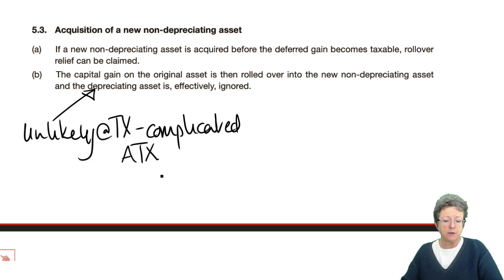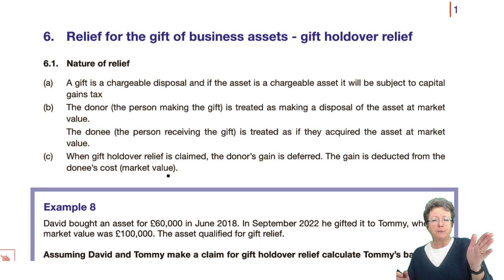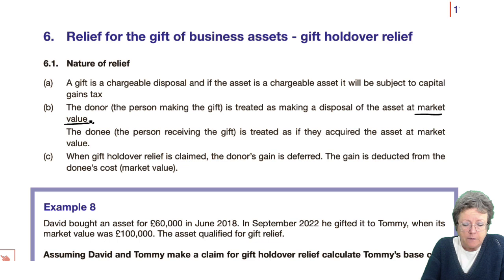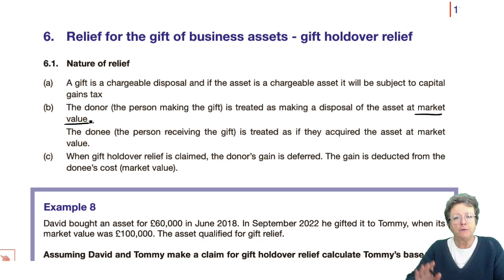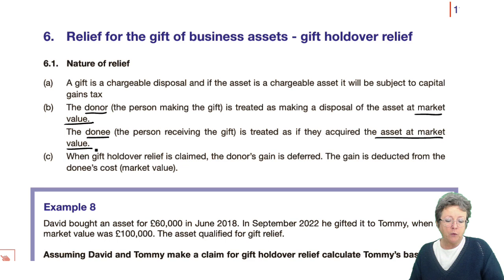Now this is gift holdover relief. A gift is a chargeable disposal, and if it is a chargeable asset, it will be subject to capital gains tax. The donor — the person making the gift — is treated as making a disposal at market value, not at arm's length. The donee is treated as though they acquired the asset at market value. When holdover relief is claimed, the donor's gain is deferred and the gain is deducted from the market price.